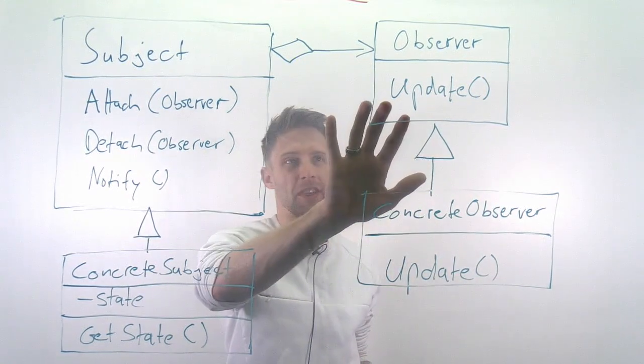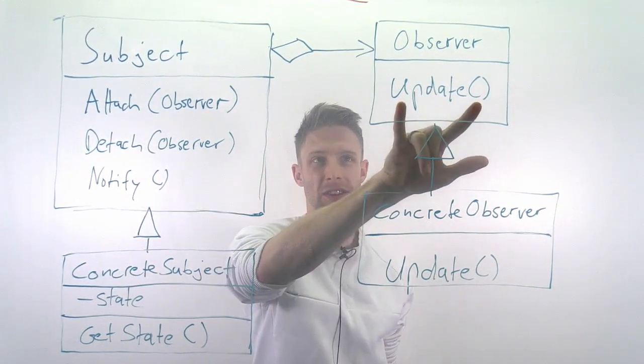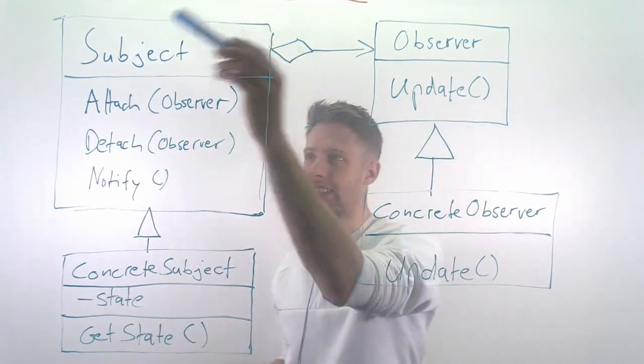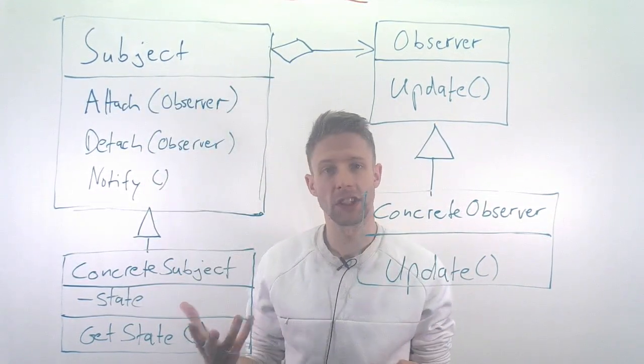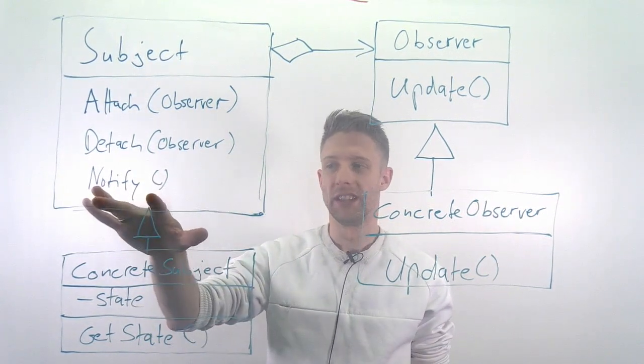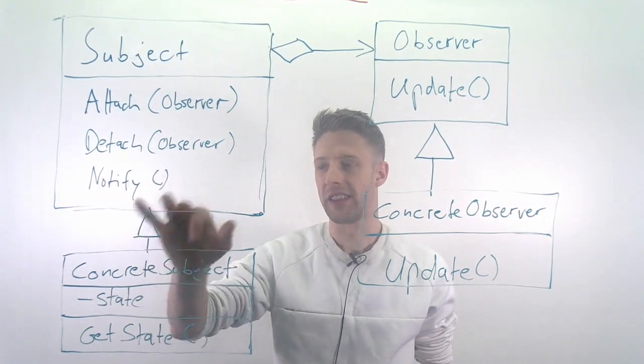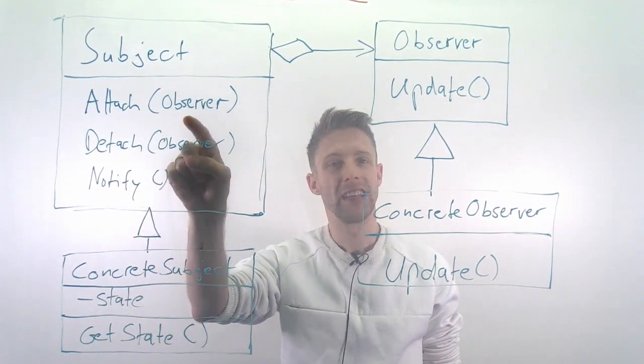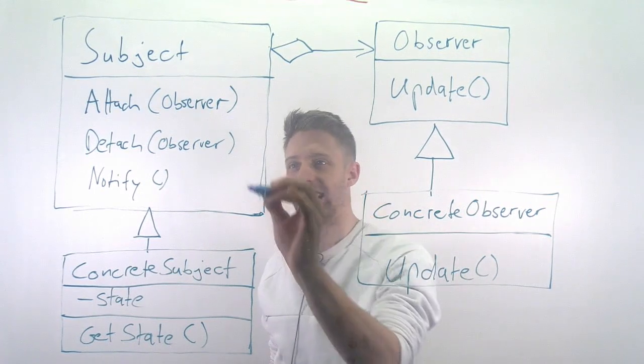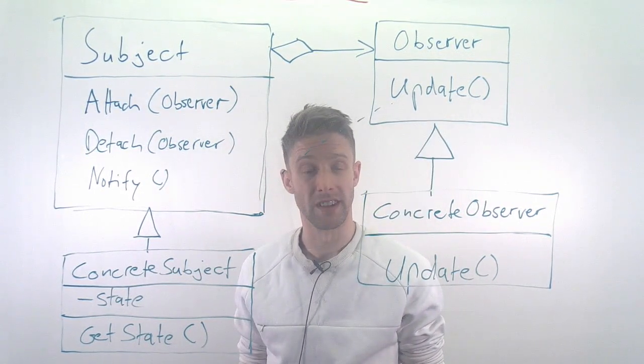The observer itself has an update method, so this is how you tell the observer something has changed. Imagine the subject changes, the data changes. What happens then is that you call the notify method of the subject, and the notify method goes through a list of all the observers and for each of these observers it calls the update method.